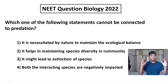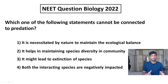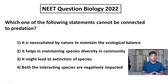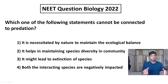Now that we have understood different types of population interactions, we can answer the question. Option four — both the interacting species are negatively impacted — is the wrong option and therefore the correct answer, because in predation one species gets benefit from the other. I hope you have understood the concept and the answer from the NEET 2022 question paper. If you have any doubts, please put them in the comment section or mail me at the email ID mentioned in the description.